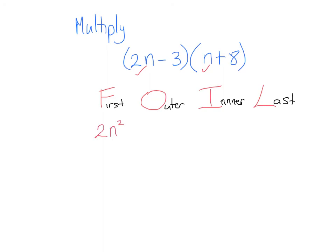Now outer, the outer term in the first parenthesis, 2n, the outer term in the next parenthesis, 8. They're on the outside. So to multiply our outer terms, we get 2n times 8, which is 16n.